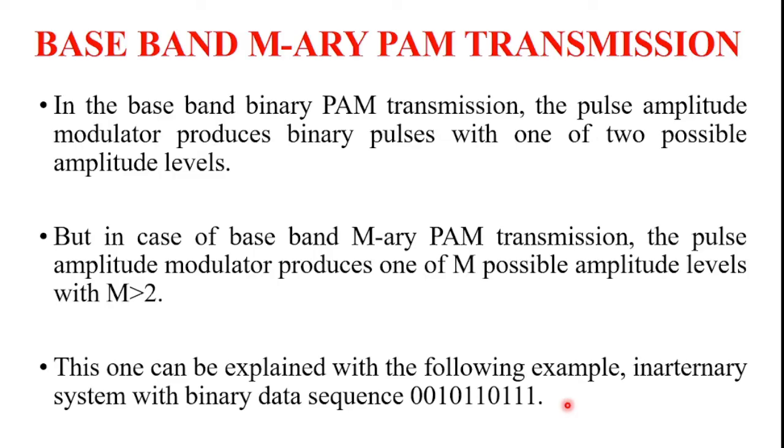In the baseband binary PAM transmission, the pulse amplitude modulator produces binary pulses with one of two possible amplitude levels. A_k equals +1 if binary symbol B_k is 1, and A_k equals -1 if symbol B_k is 0. These are the two amplitude levels in case of baseband binary PAM transmission.